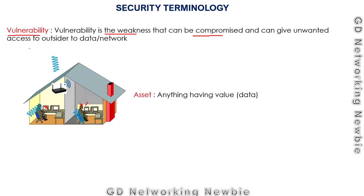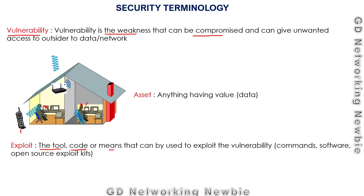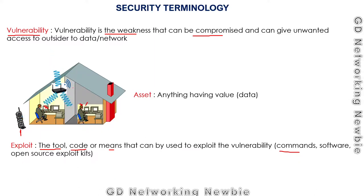If there is some tool or device which is able to receive these signals, that tool — which has the capability to receive them — is known as an exploit. An exploit is defined as any tool, code, or means that can be used to exploit a vulnerability. In our case the signals are the vulnerability, and this tool can take advantage of that vulnerability. Exploits can be a set of commands, software, or even open source exploit kits available in the market.